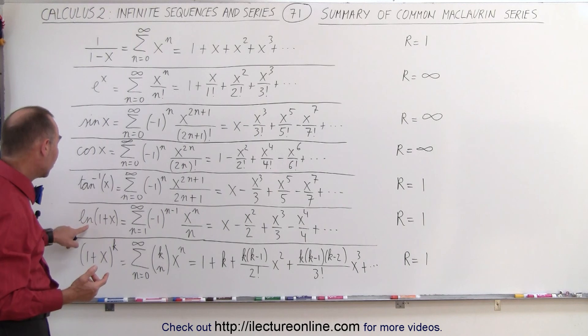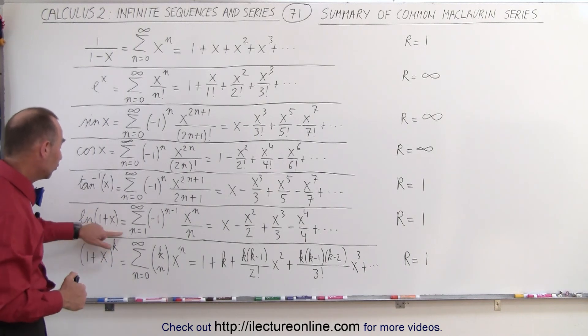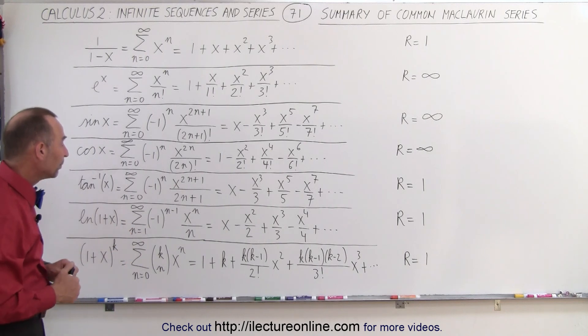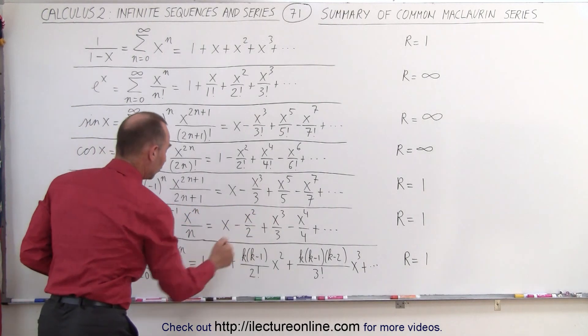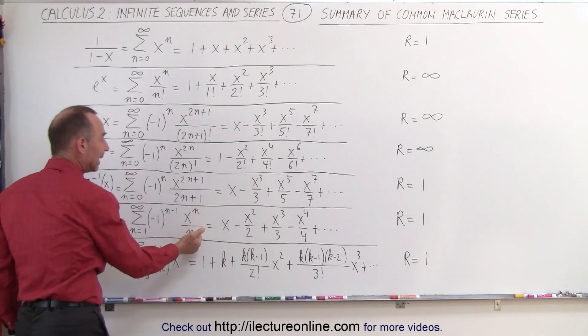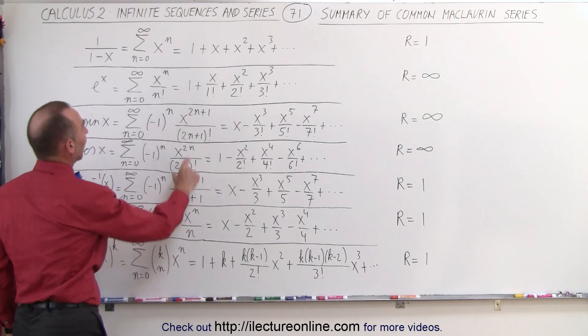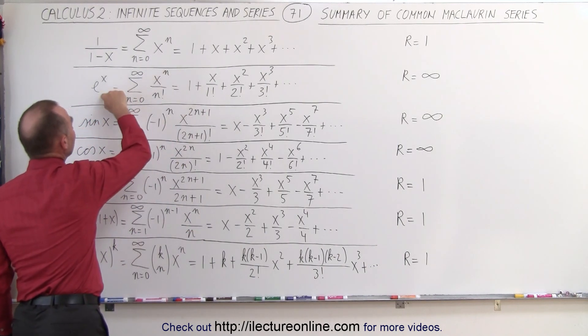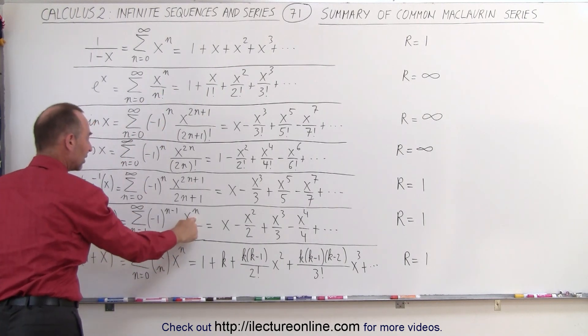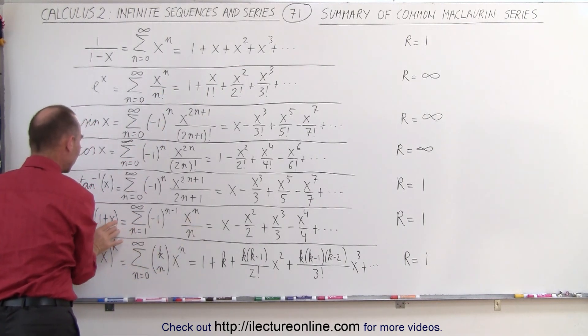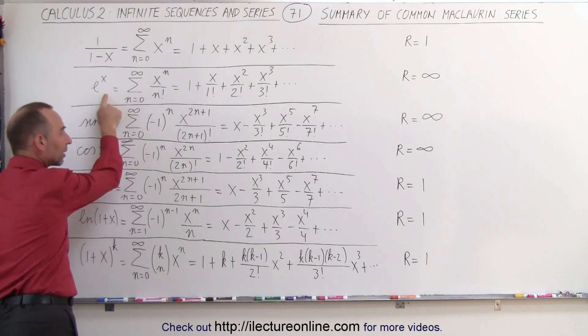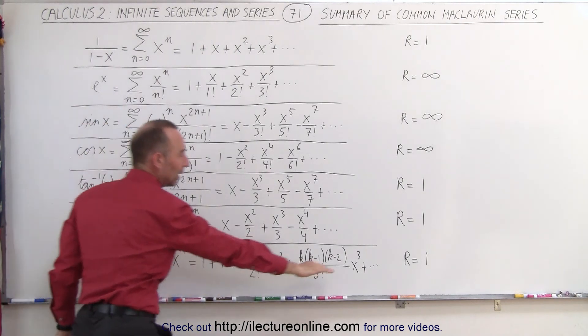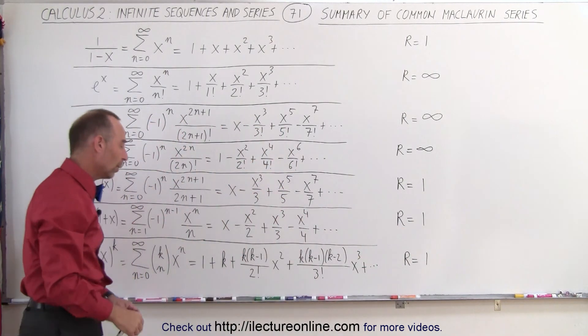Of course the problem with that is that natural log of 1 is equal to 0, so we don't want to have that first term in there. We start with n equals 1, and we have alternating signs as well, and we divide by n, not n factorial. So we have the same thing as over here: e to the x is x to the n divided by n factorial, here it's x to the n divided by n. Because it's a natural log instead of e to the x, that requires us to have a radius of convergence of 1 as well.